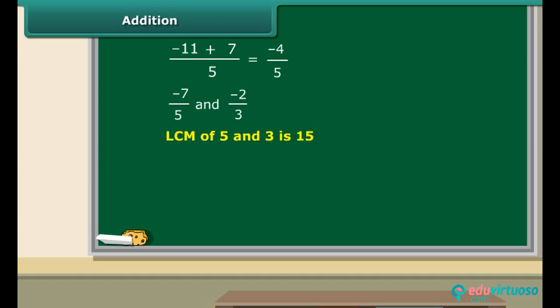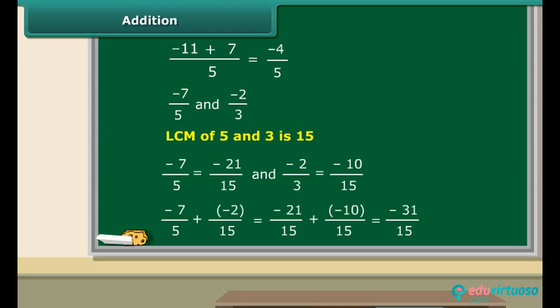And if the denominators of the rational numbers are not the same, in that case firstly we find the LCM of the denominators. Here the LCM is 15. Then we find the equivalent rational numbers of the given rational numbers with this LCM as the denominator. Here, minus 7 by 5 is equivalent to minus 21 by 15, and minus 2 by 3 is equivalent to minus 10 by 15. Then we add the two rational numbers.